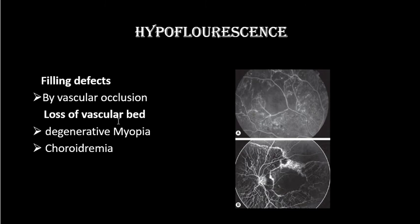Filling defects can also be due to loss of the vascular bed, as in degenerative myopia and choroideremia. In proliferative diabetic retinopathy, significant ischemia causes vascular occlusion so dye does not fill those vessels. In areas with no blood vessels, only the present vessels are filled, showing the hypofluorescent filling defect.